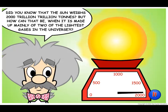Did you know that the Sun weighs 2,000 trillion trillion tons? But how can that be, when it's made up mainly of two of the lightest gases in the universe?